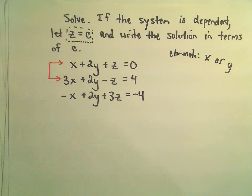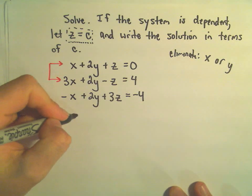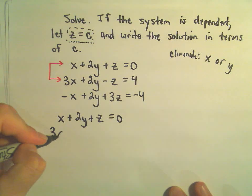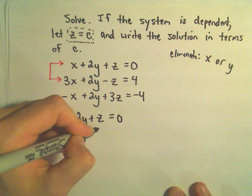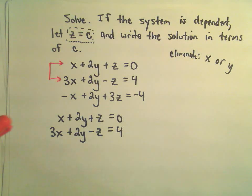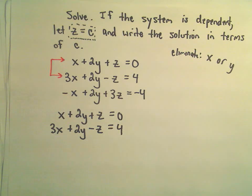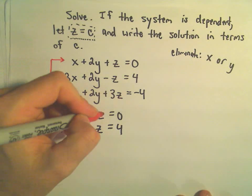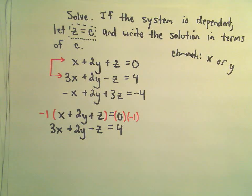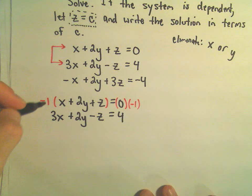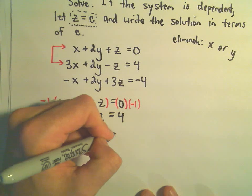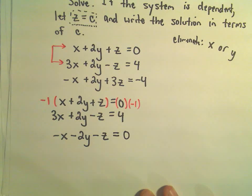So we've got x plus 2y plus z equals 0. My second equation, we've got 3x plus 2y minus z equals 4. Well, to get the y's to cancel out, I just need one of these to be negative. So I'll just take my first equation and multiply both sides by negative 1. And if we do that, our first equation will have negative x minus 2y minus z. Well, 0 times negative 1 is still 0.